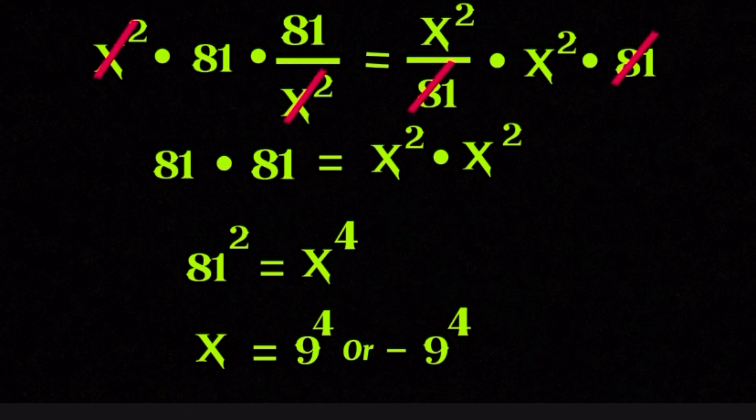This is where many people make a mistake. They rush and say x is 9 and stop there, but mathematics does not reward rushing. It rewards completeness. Because the power on x is an even power, both positive and negative values will work. So x equals 9 is a solution, and x equals negative 9 is also a solution.